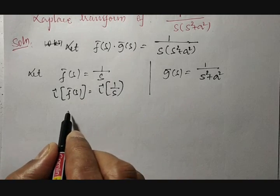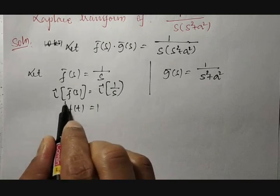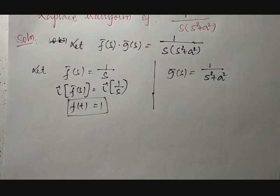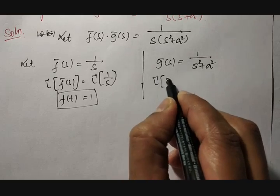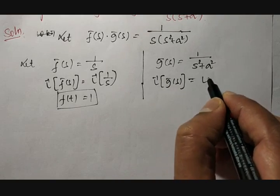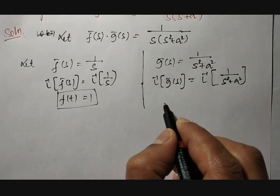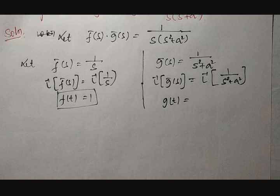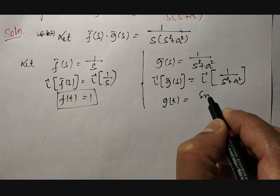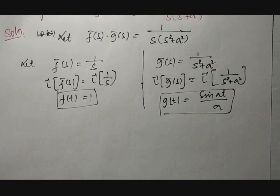Therefore, Laplace inverse of f̄(s) is nothing but f(t), which is equal to 1. Similarly, Laplace inverse of ḡ(s) is equal to Laplace inverse of 1 divided by s squared plus a squared. This is nothing but g(t), which is equal to sin(at) divided by a. So we have obtained f(t) and g(t).